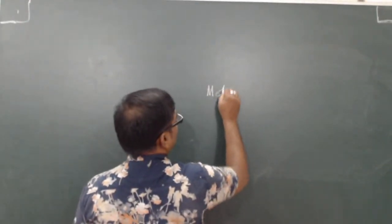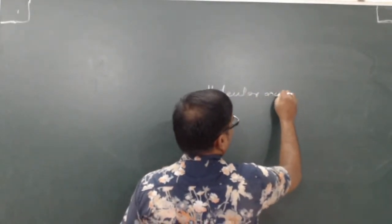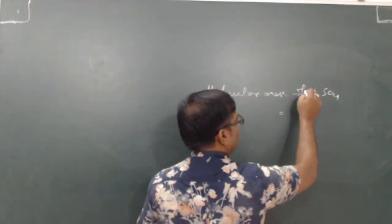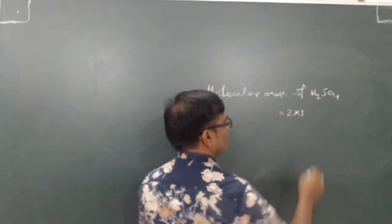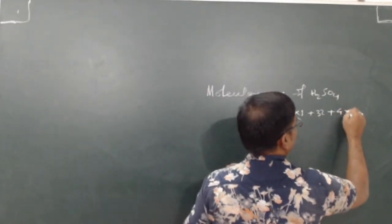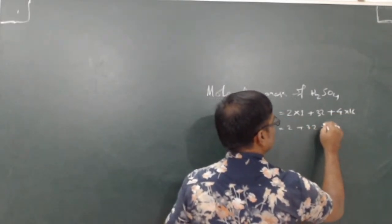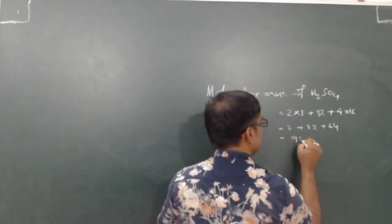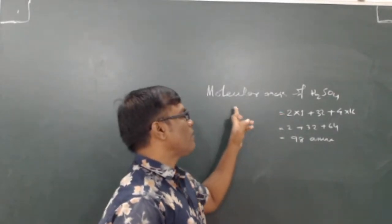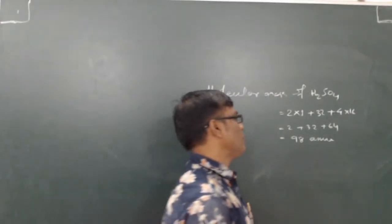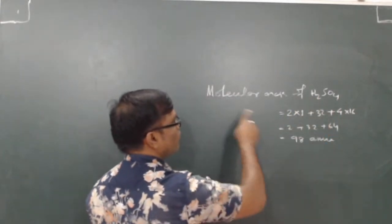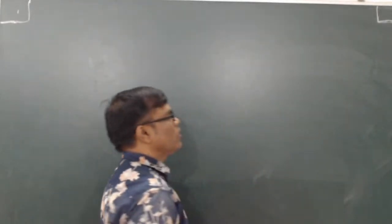For example, the molecular mass of H2SO4 equals 2 times 1 (hydrogen) plus 32 (sulfur) plus 4 times 16 (oxygen) equals 2 plus 32 plus 64 equals 98 AMU. By adding the atomic masses of all the atoms, we get the molecular mass, which is 98 AMU.